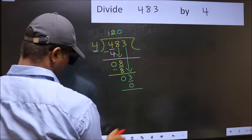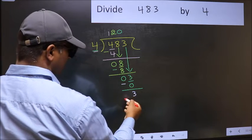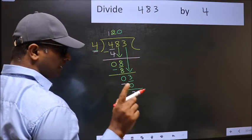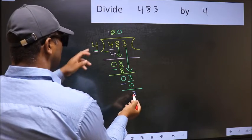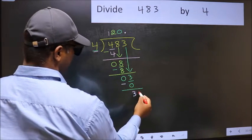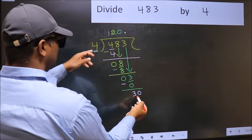Over here we did not bring any number down, and 3 is smaller than 4, so now you can put a dot and take 0. So 30, a number close to 30 in the 4 table is 4 sevens 28. Now you should subtract: 30 minus 28 is 2.